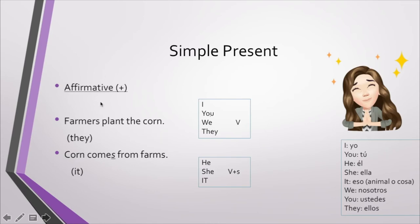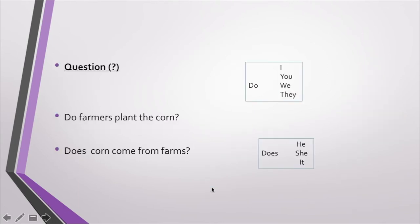El verbo esta vez se mantiene igual. Aquí no existe la regla de la S. Solamente en afirmación tenemos la regla de la S si es que el sujeto es he, she, it.